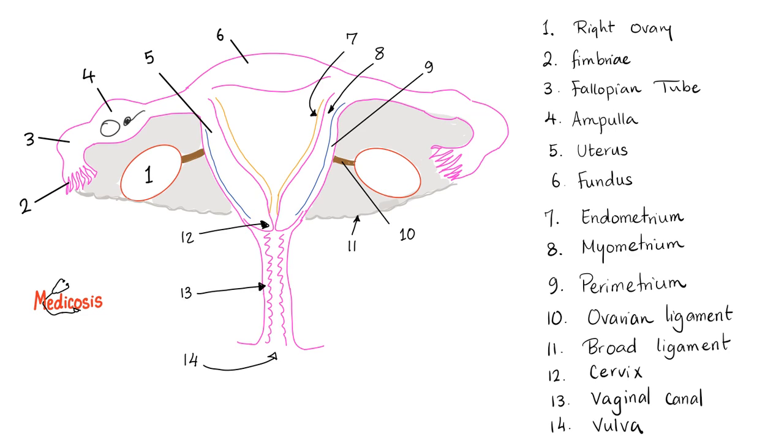Five is the uterus. Six is the fundus of the uterus. Seven is the endometrium of the uterine wall. Eight, myometrium. Nine, perimetrium. All of them are the uterine wall. How about ten? Ten is the ovarian ligament. Very important. Eleven is the broad ligament. Twelve is the cervix or the cervical os. We have two cervixes in our body. This is number one. Number two is in your neck. Because literally the word cervix means neck. It could be your neck or the neck of the uterus.